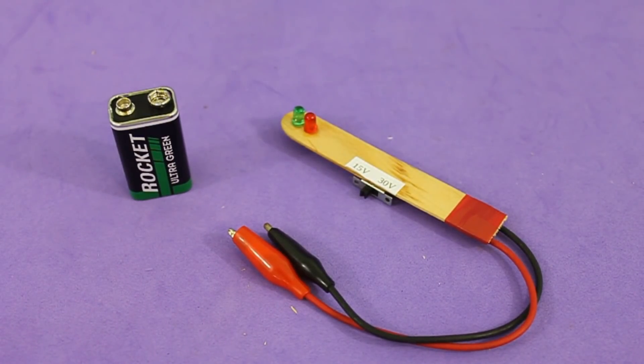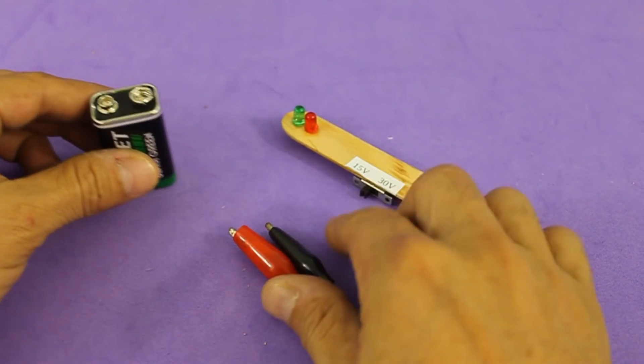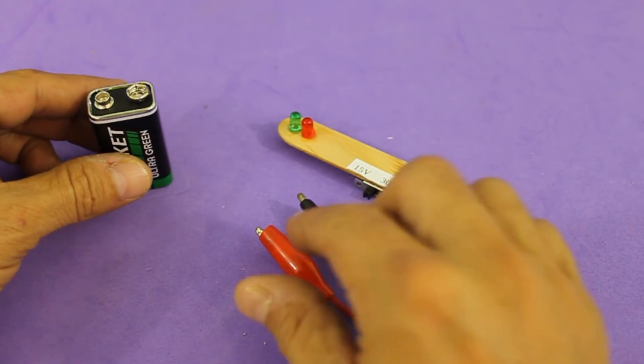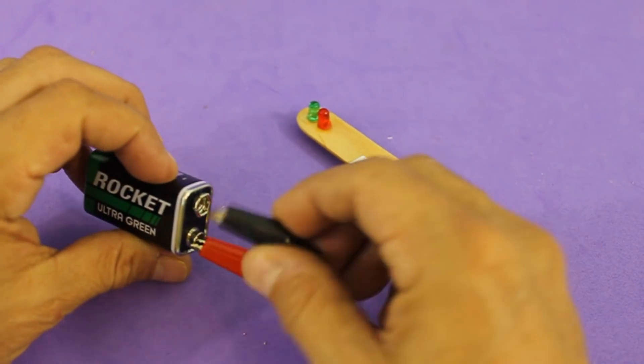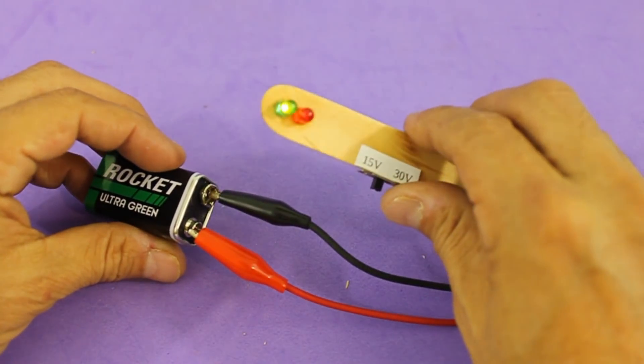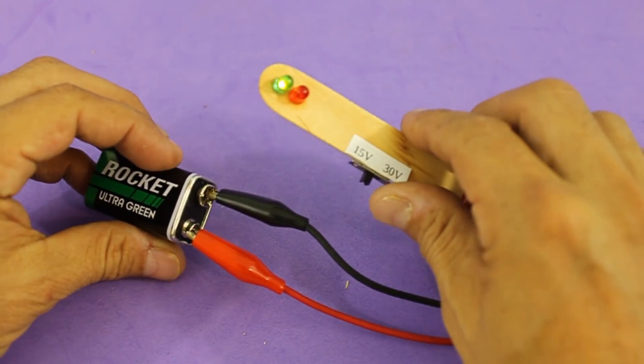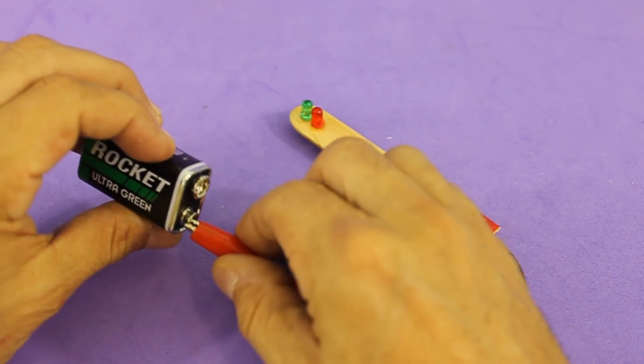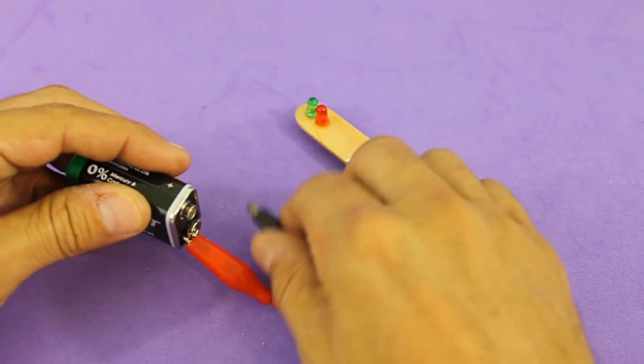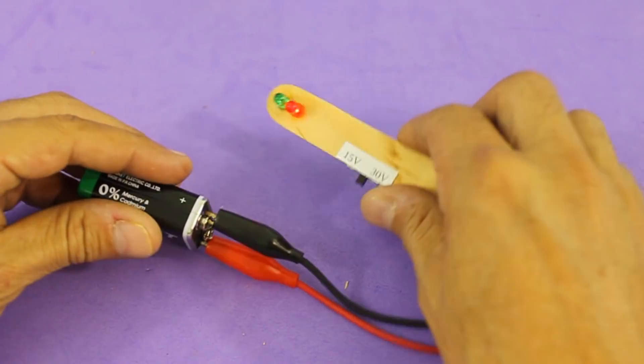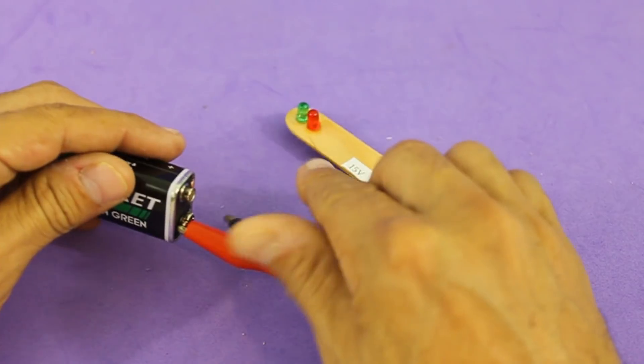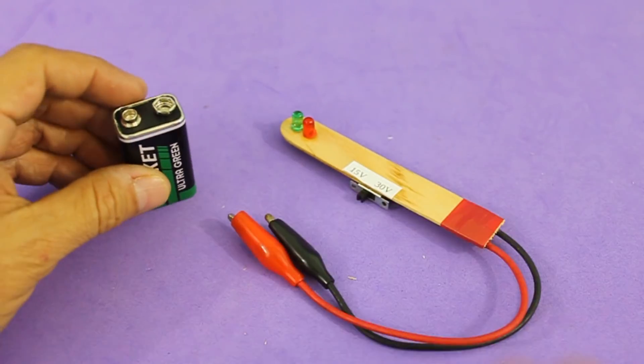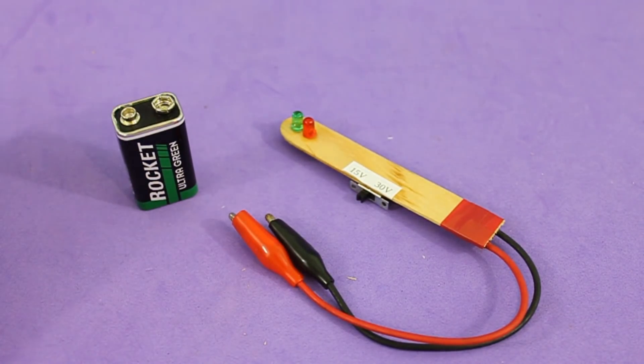It is very easy to use. If we connect the test probes with the correct polarity, the red one to the positive terminal and the black to the negative, then the green LED will turn on. But if we connect in the wrong way, then the red LED will turn on. In this way we have a way to tell the polarity of the battery or device that we are testing.